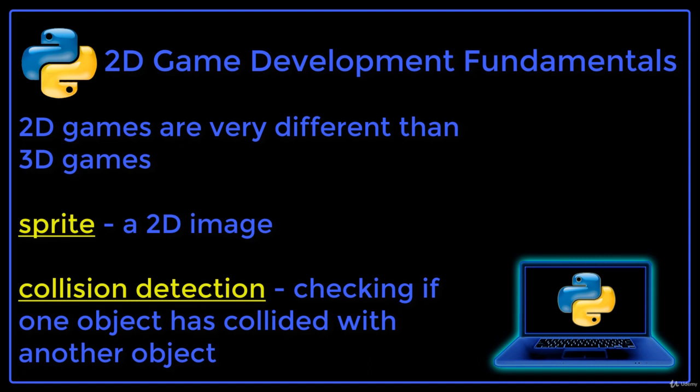One big component of 2D game development is collision detection — that is, determining if one object has collided with another object. We will learn how to write Python code to check if two objects have collided with one another.